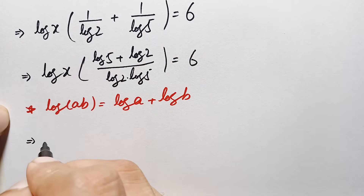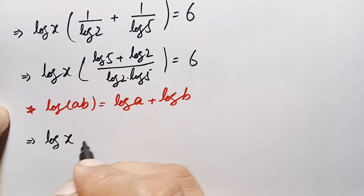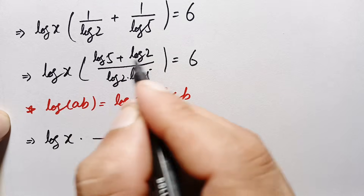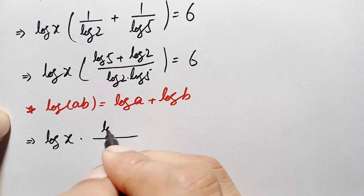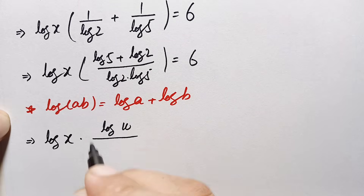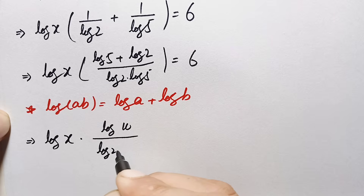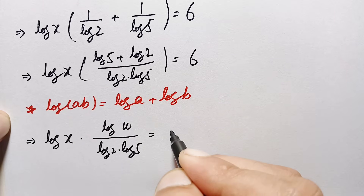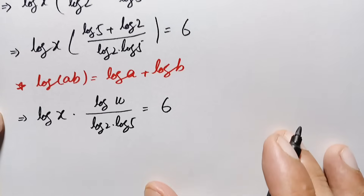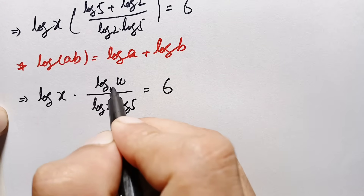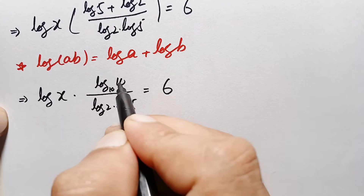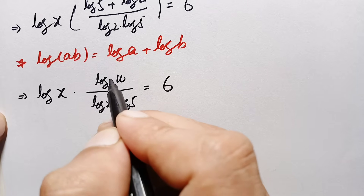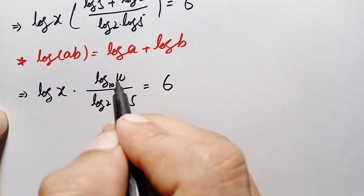This implies log of x times log of 10, divided by (log of 2 times log of 5), is equal to 6. Since log of 10 with base 10 equals 1, we replace log of 10 with 1. So this becomes log of x divided by (log of 2 times log of 5) equals 6.